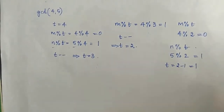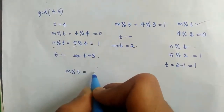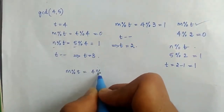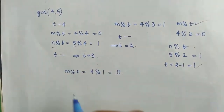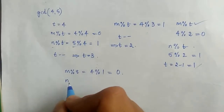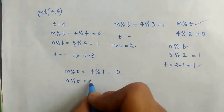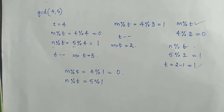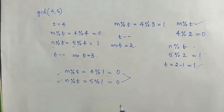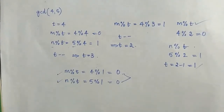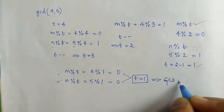After decrementing t we go back to the second step and perform m mod t. m is 4 and t is now 1, so 4 mod 1 equals 0. We then go to the third step and perform n mod t: 5 mod 1 is equal to 0. Since both m mod t and n mod t are equal to 0, we return the value of t as the GCD. Here t is equal to 1.